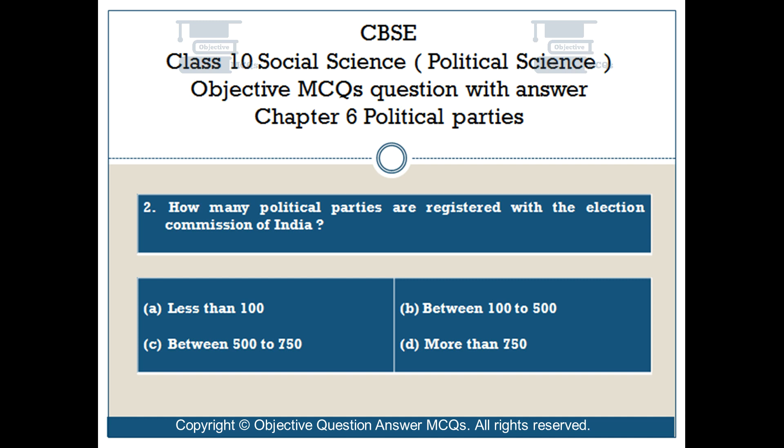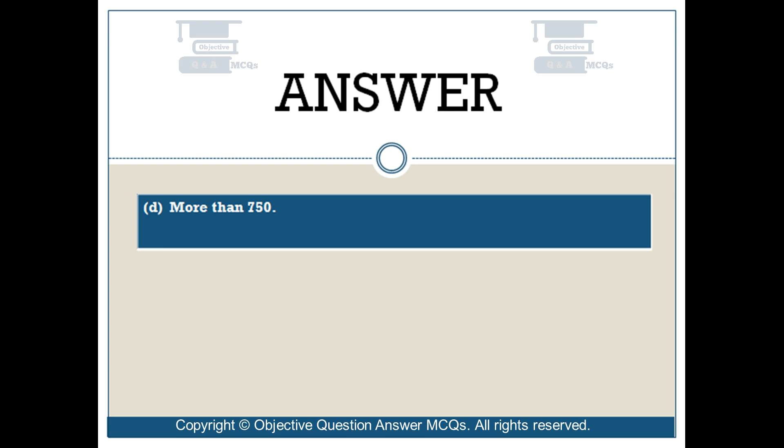Option D: more than 750. The right answer is Option D: more than 750.